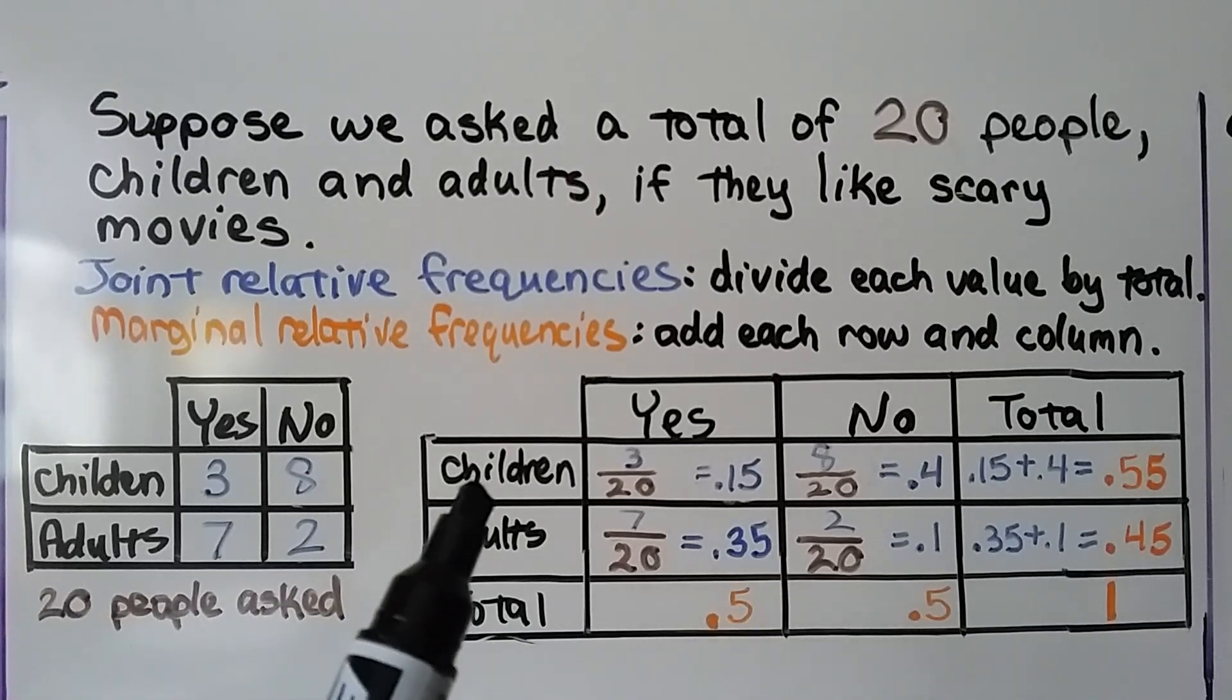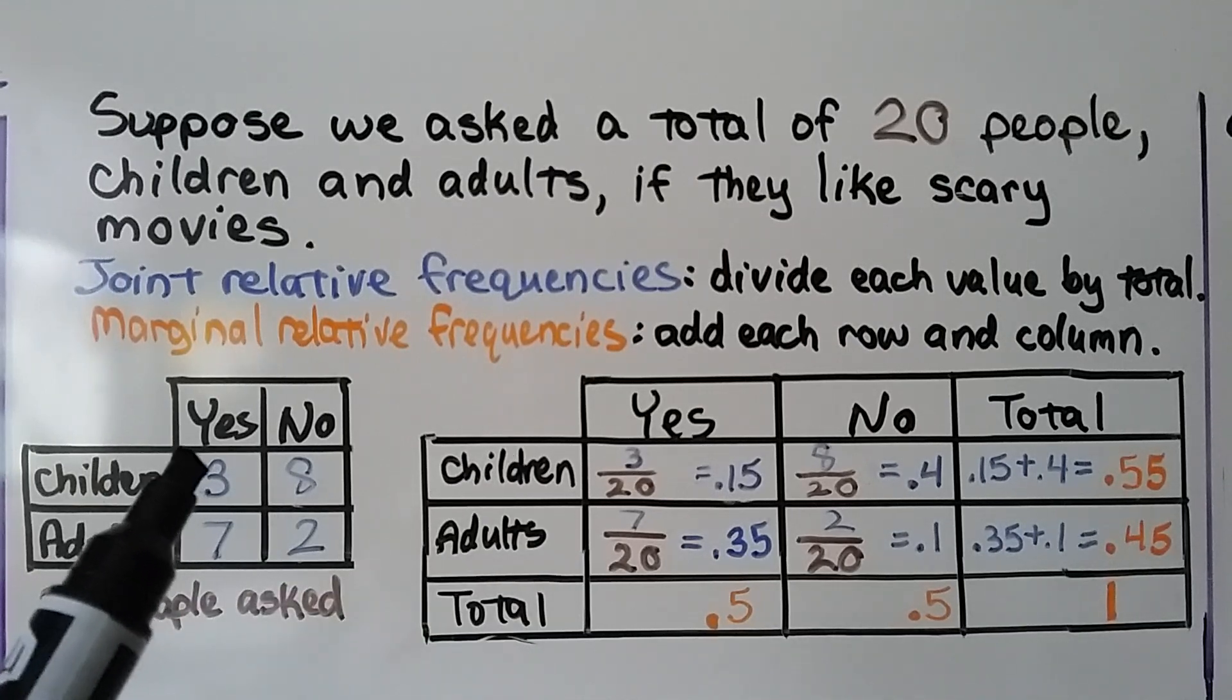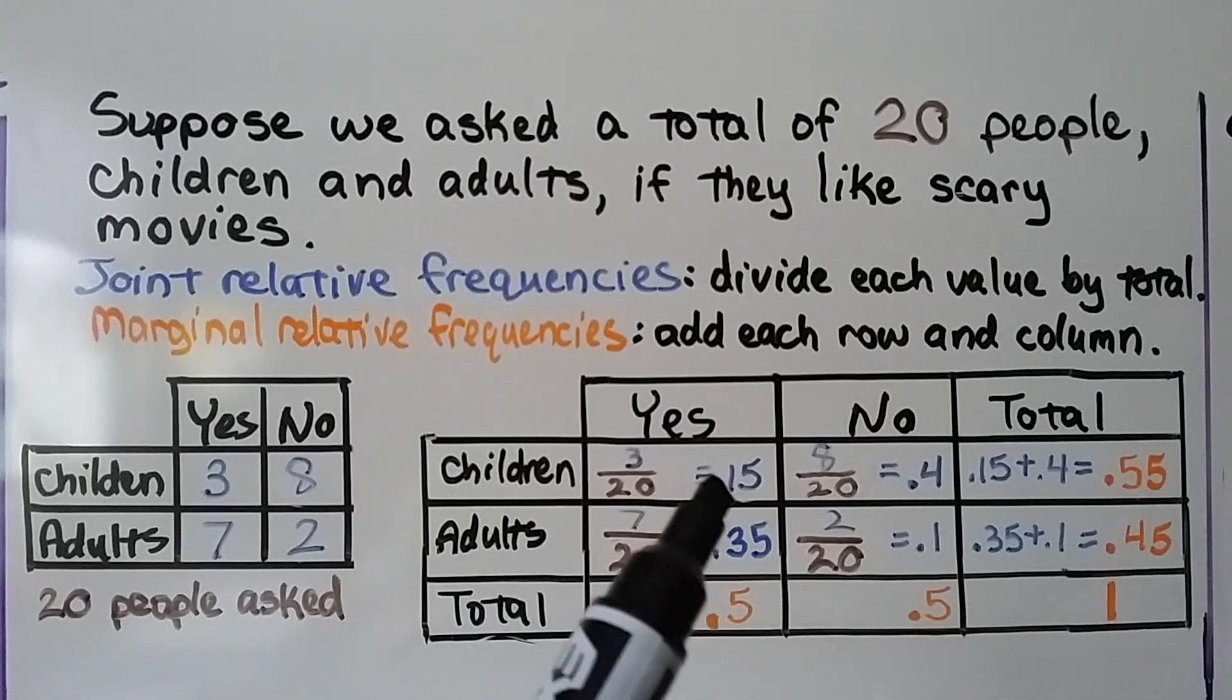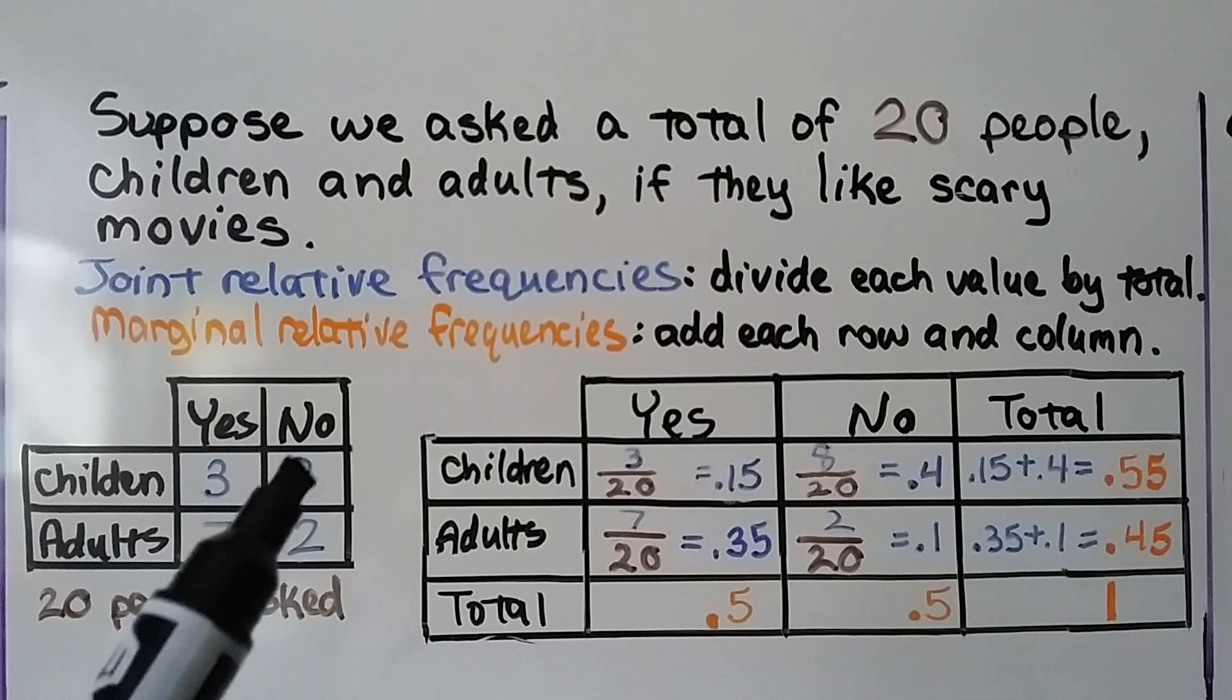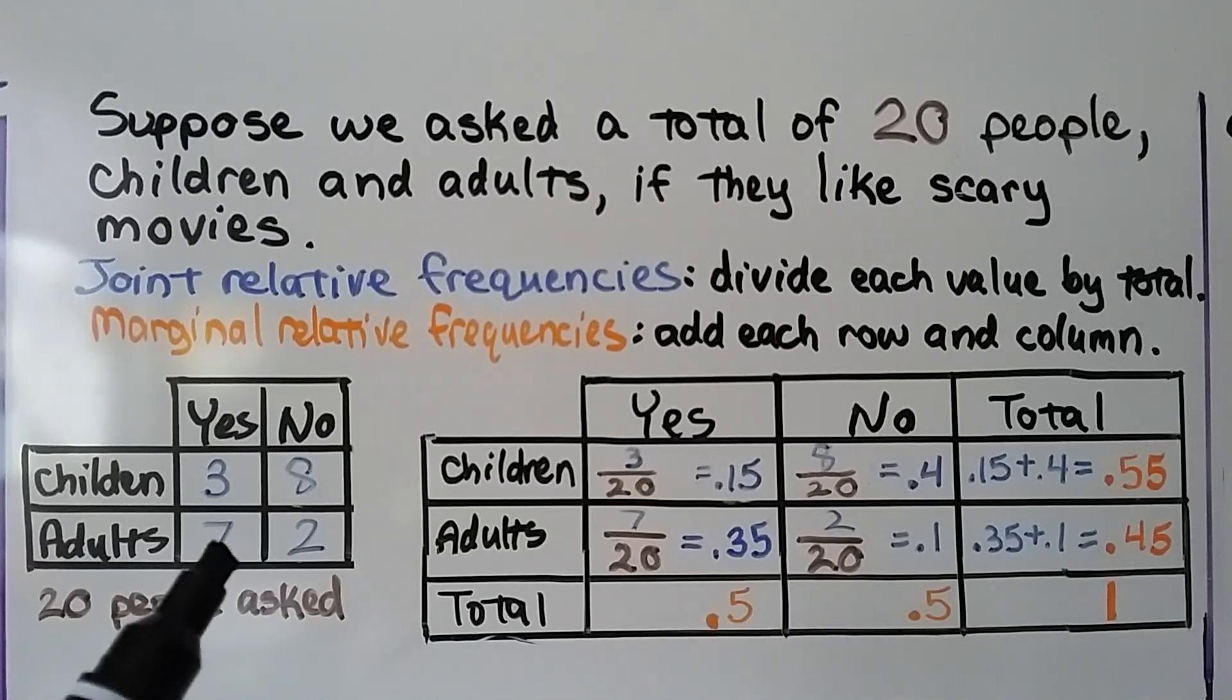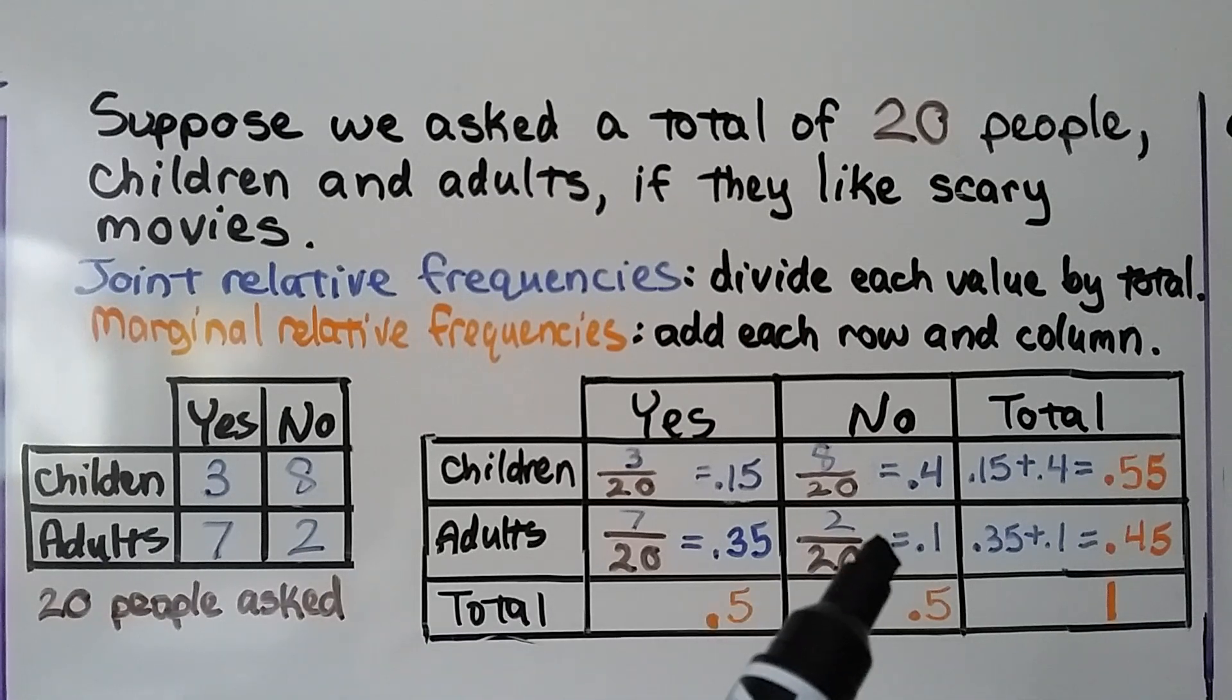So, for the joint relative frequency of children who like scary movies, we have this three for yes over the entire amount, twenty. That gives us a 0.15. For the no, we have eight over the twenty, that gives us 0.4. For the adults, yes, we have seven over twenty, that gives us 0.35. And for the adults, no, we have a two over the twenty, that gives us 0.1.